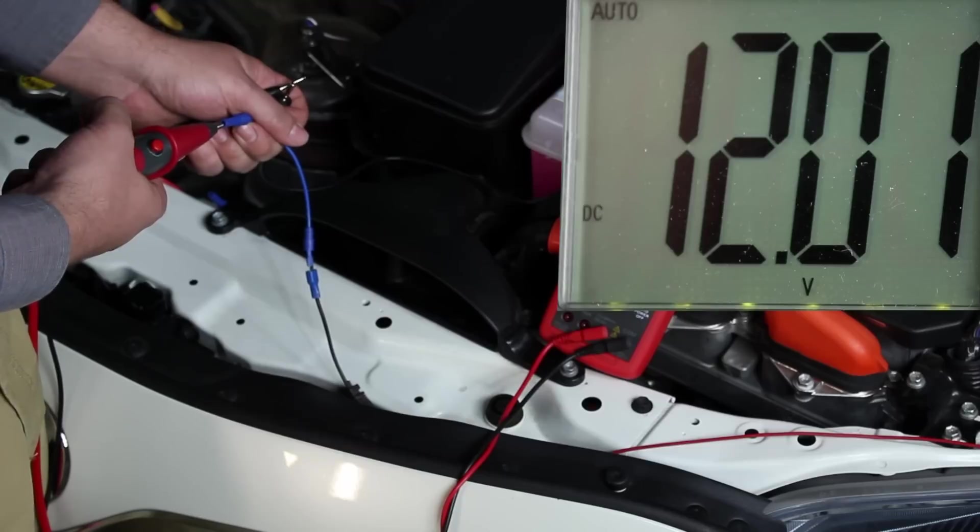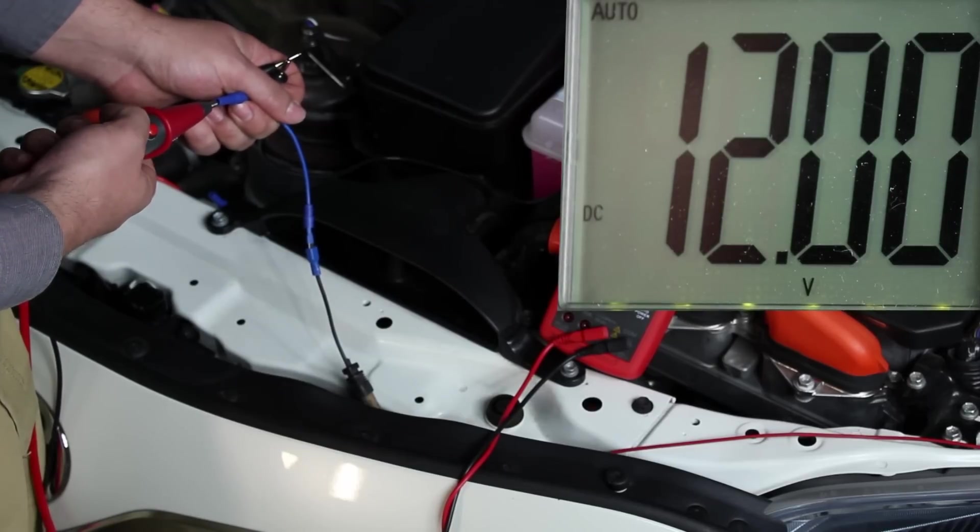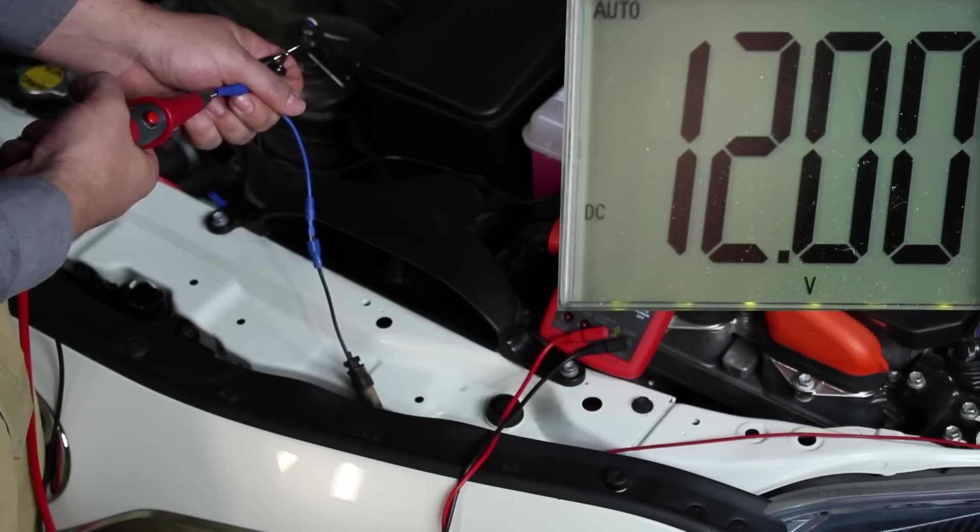This now exposes the entire loop of the circuit all the way back to the battery. Now, if I measure the connector, you can see that I'm getting system voltage. System voltage means that I can rule out opens and shorts to ground.